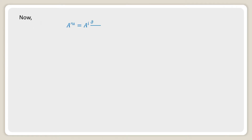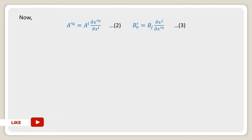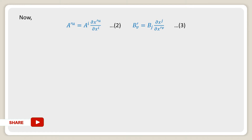Now, A'^u is equal to A^i (∂X'^u / ∂X^i). Say this is equation number 2. Again, B'^v is equal to B^j (∂X^j / ∂X'^v). Say this is equation number 3.